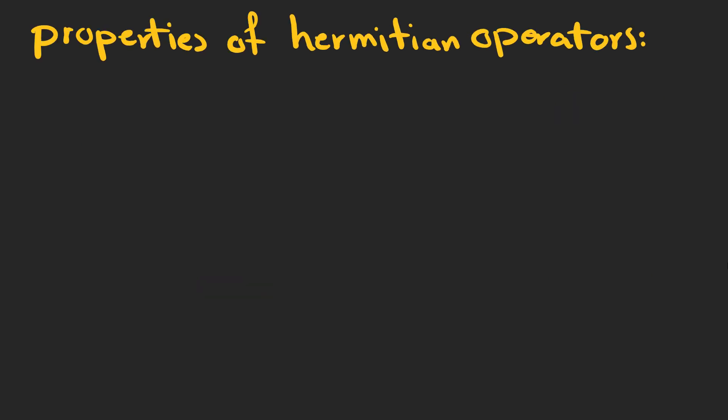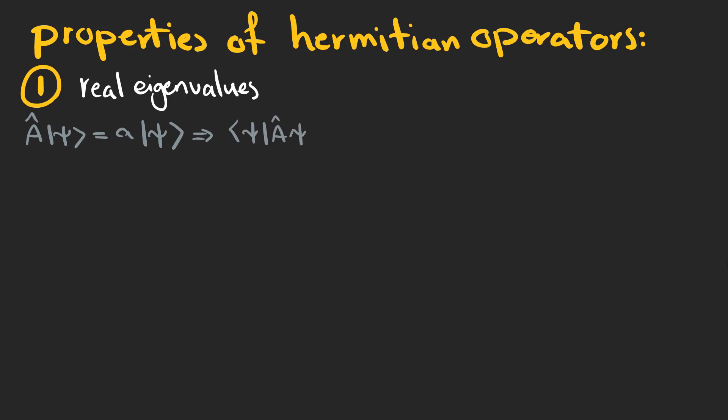Mathematically speaking, the eigenfunctions of a Hermitian operator have three important properties. First, their eigenvalues are real, and here's the proof.